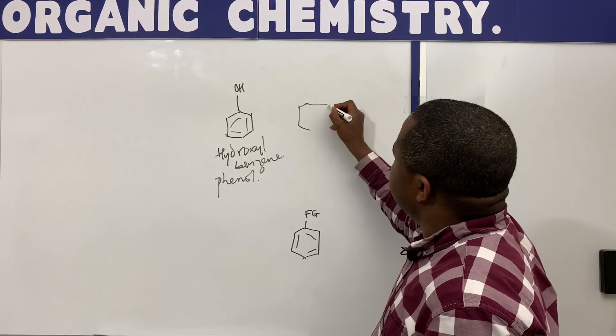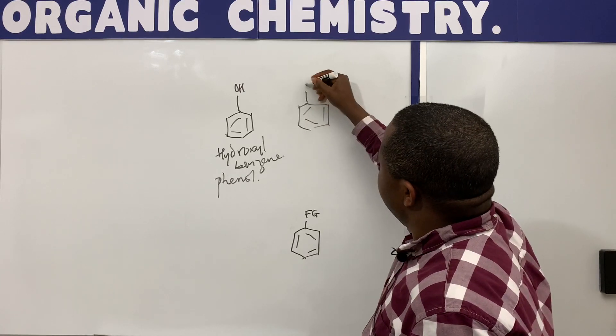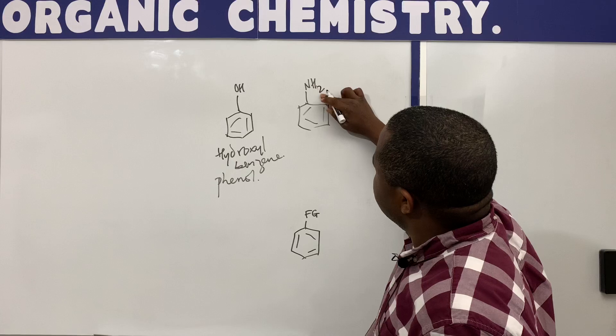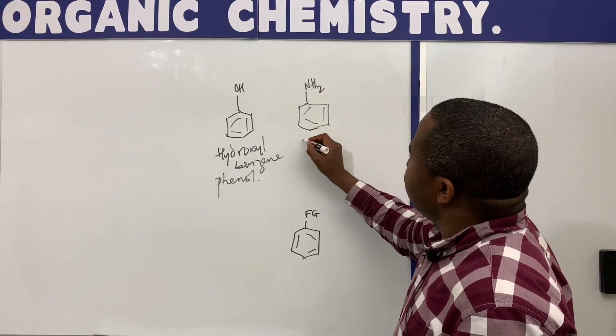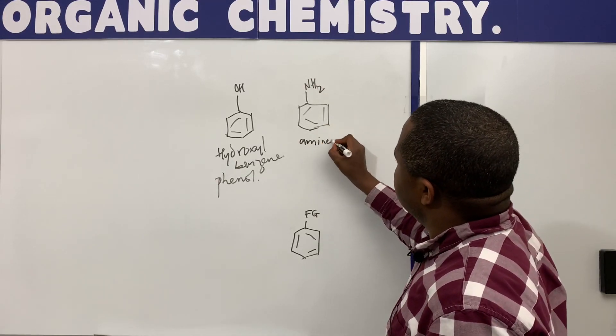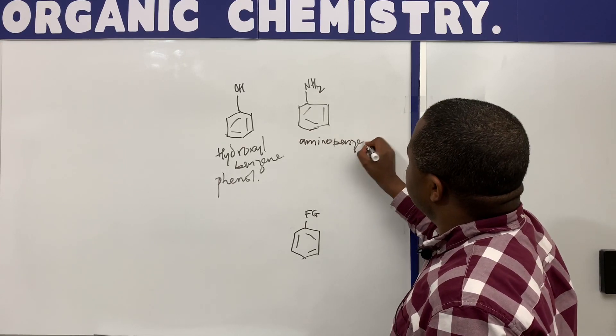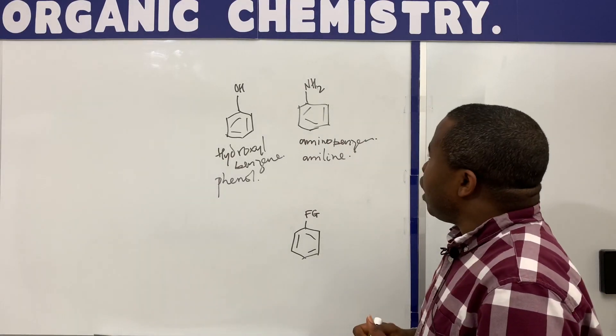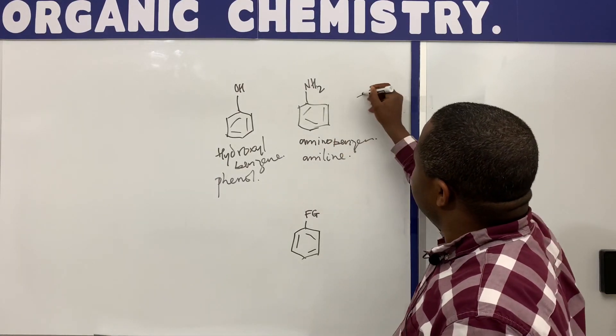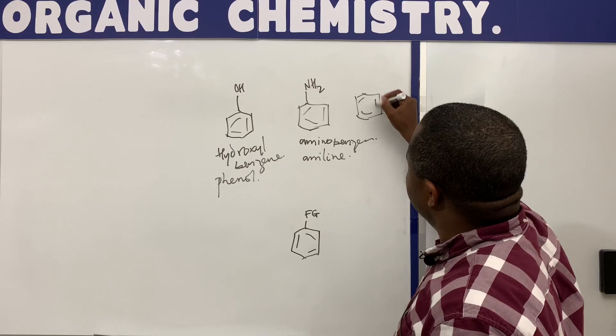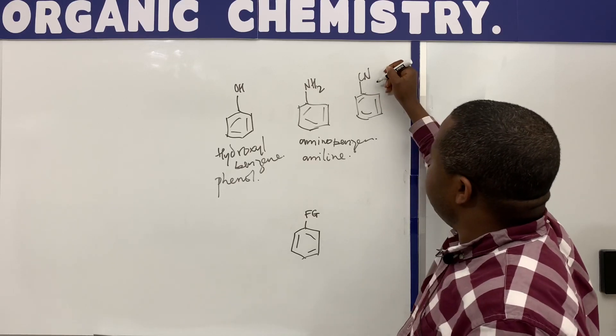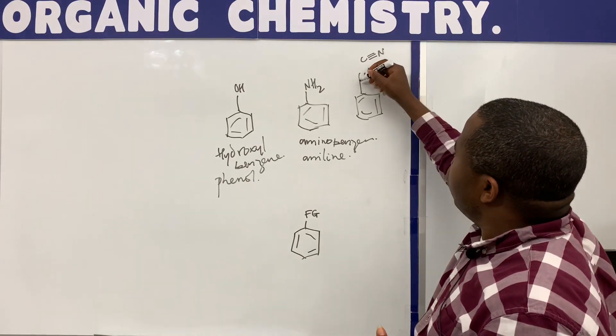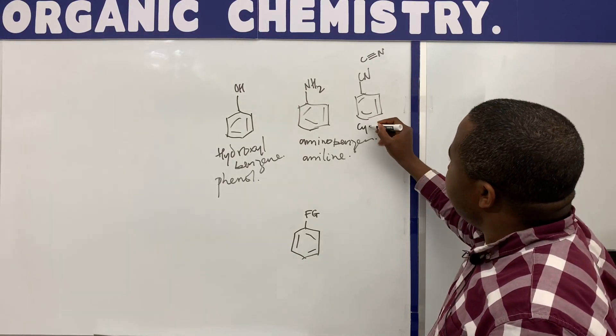And if you have something like this with CN, which is usually written this way in the structural formula, you have cyano-benzene.